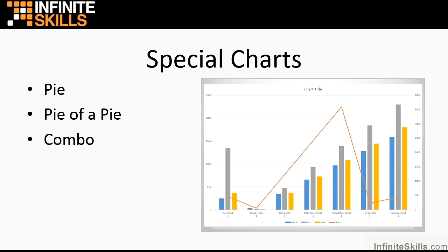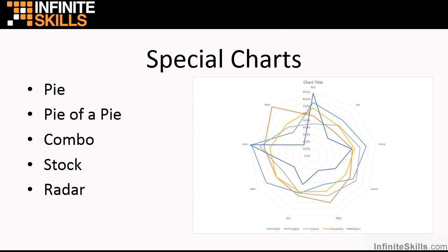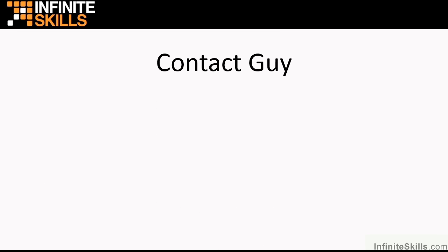We look at combo charts — joining two types of chart in the same chart with a second scale. Here we have columns for some data and a line for another. Stock charts allow you to map how your stock values are doing — for example, showing volumes bought or sold and the high and low points for a stock on a given day. Radar charts are very pretty and, once you understand their makeup, can be quite useful for interrogating data. And the fantastic scatter chart — which at first makes little sense, but once explained you recognize its real potential.